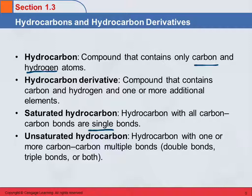Unsaturated hydrocarbons are going to have one or more multiple bonds. It could be double bonds, triple bonds, or both. But if it has even one double bond, it's considered an unsaturated hydrocarbon.